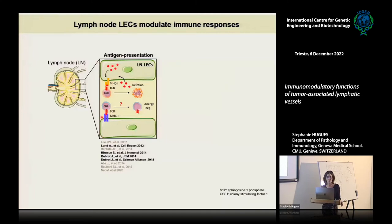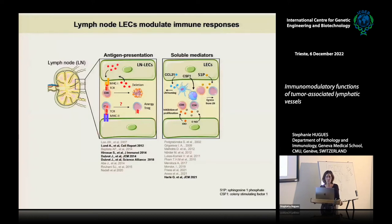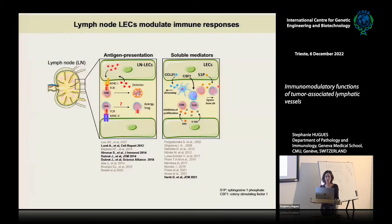Whether they can also present antigens through MHC class 2 and impact CD4 T cell responses is much less clear, and this is one of our focuses in the lab. Besides their role as antigen-presenting cells, they can also produce soluble mediators. They can produce IDO, this enzyme implicated in tryptophan catabolism, or nitric oxide, and therefore inhibit T cell proliferation. They can also influence immune cell trafficking by producing chemokines such as CCL21 or sphingosine-1-phosphate. It has been shown also that they can produce CSF-1, serving as a niche in the lymph node for subcapsular macrophages. So they can impact the proliferation, migration, and survival of immune cells by producing all these factors.